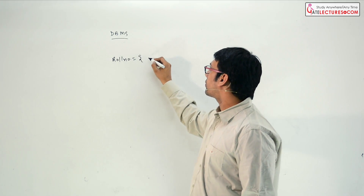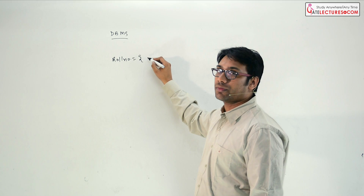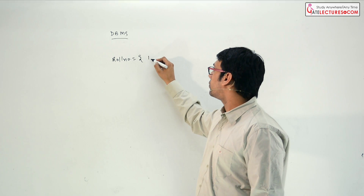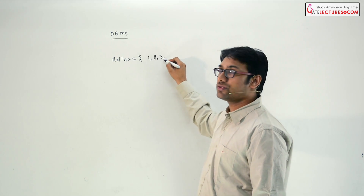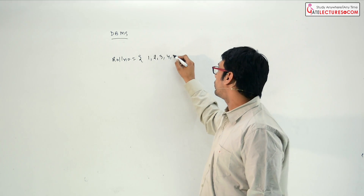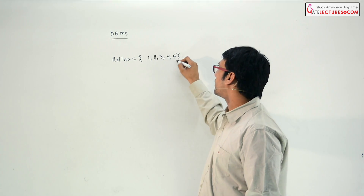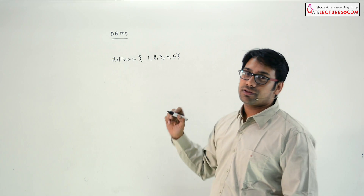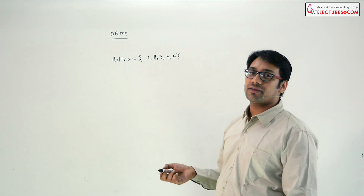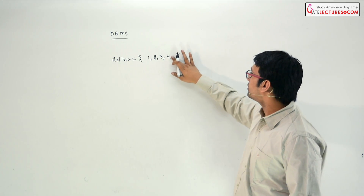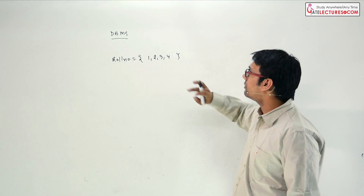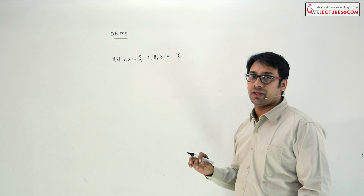The set of roll numbers is going to contain the roll numbers which are 1, 2, 3, 4, and 5. For simplicity, let us assume it is a very small set containing only 4 elements.